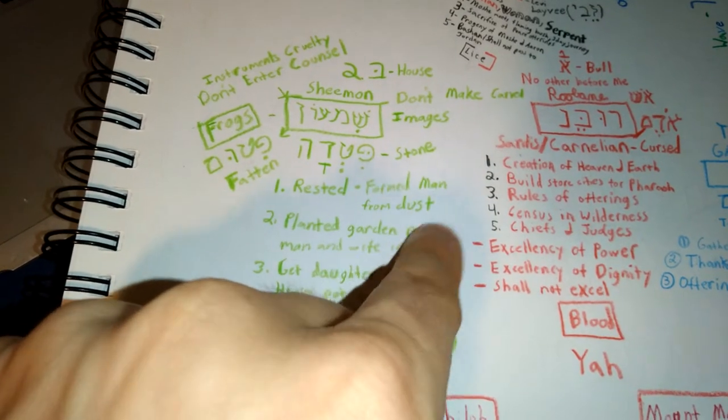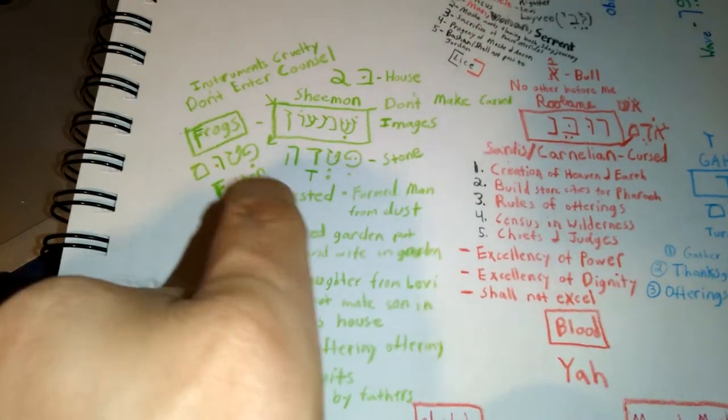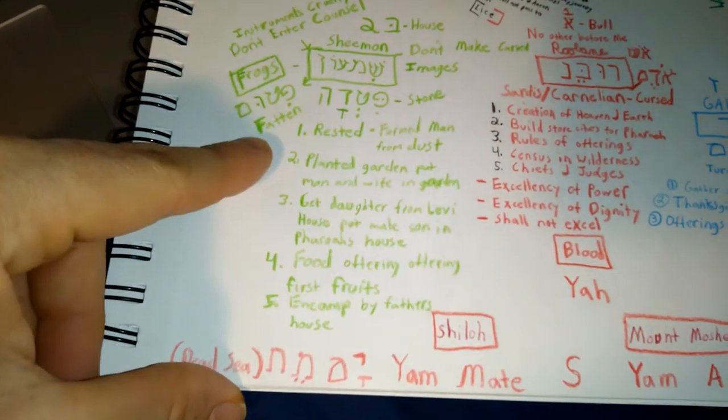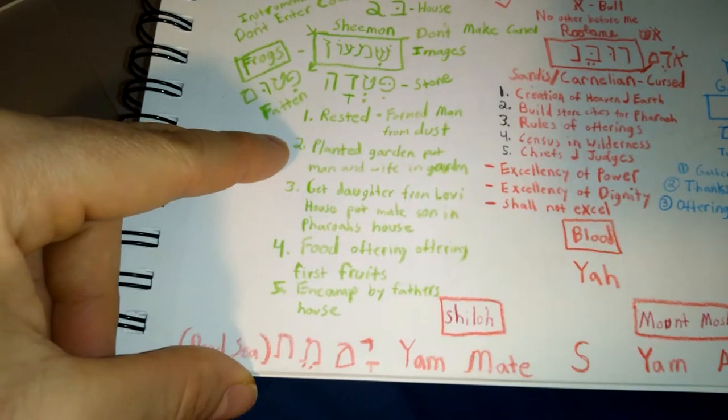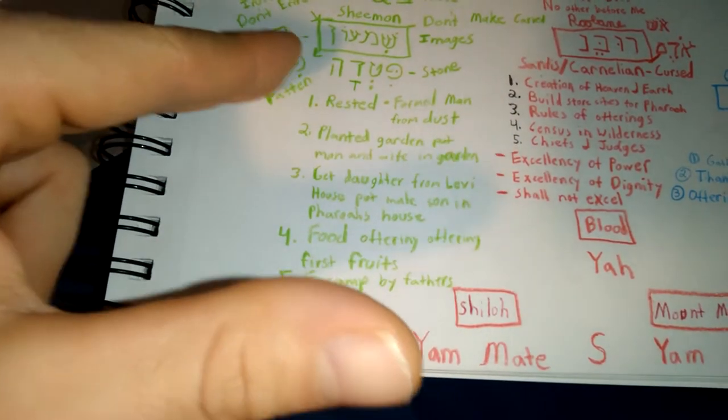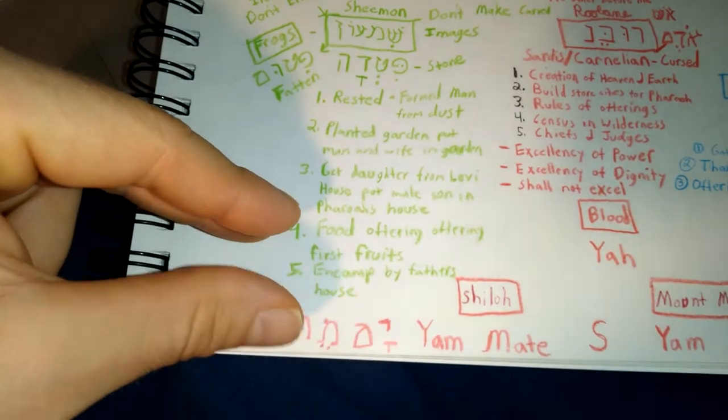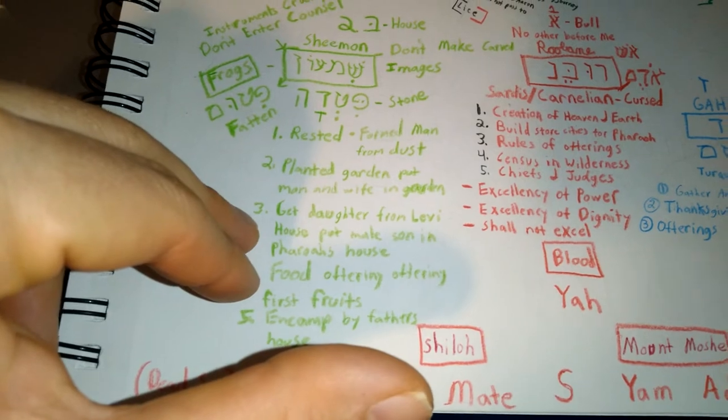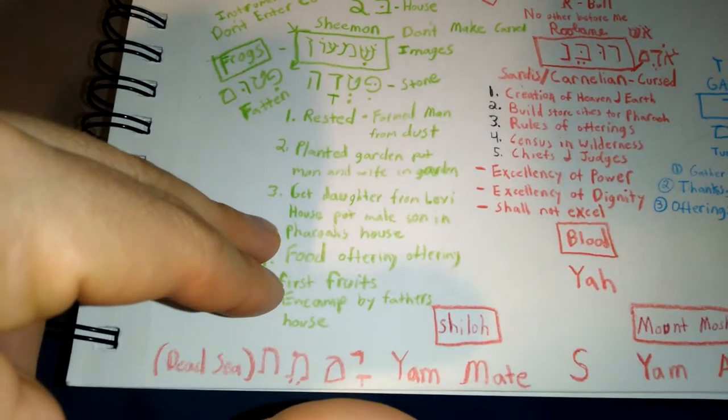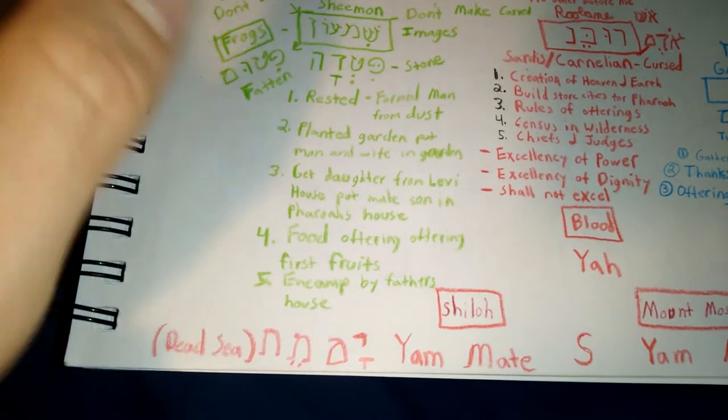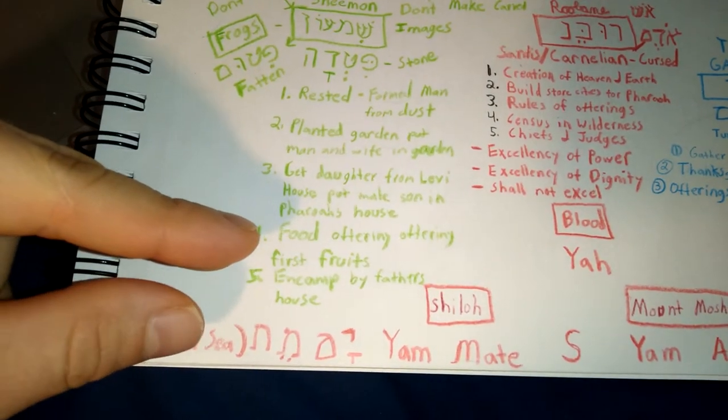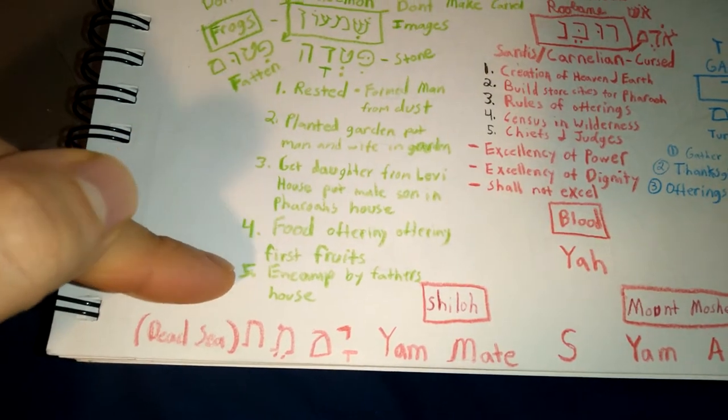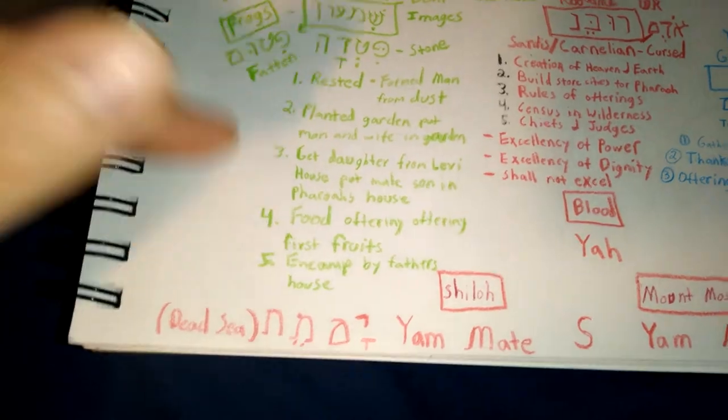Rested, formed man from dust. So that's part of the duties. Planted a garden. Put man and wife in the garden. Got a daughter from Levi. And always put the son into the Pharaoh's house. Food offering. First fruits. And encamp by the father's house.